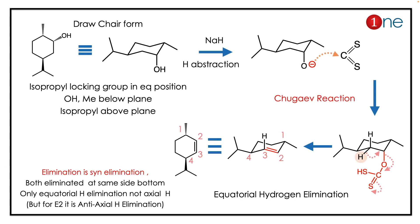The answer involves the Chugaev reaction. If you know the Chugaev reaction, you may realize it's an interesting one because of its stereochemistry. First, you have to draw the reactant in chair form. If you draw it, methyl and isopropyl are arranged relative to each other, and the base abstracts the proton in the next step.